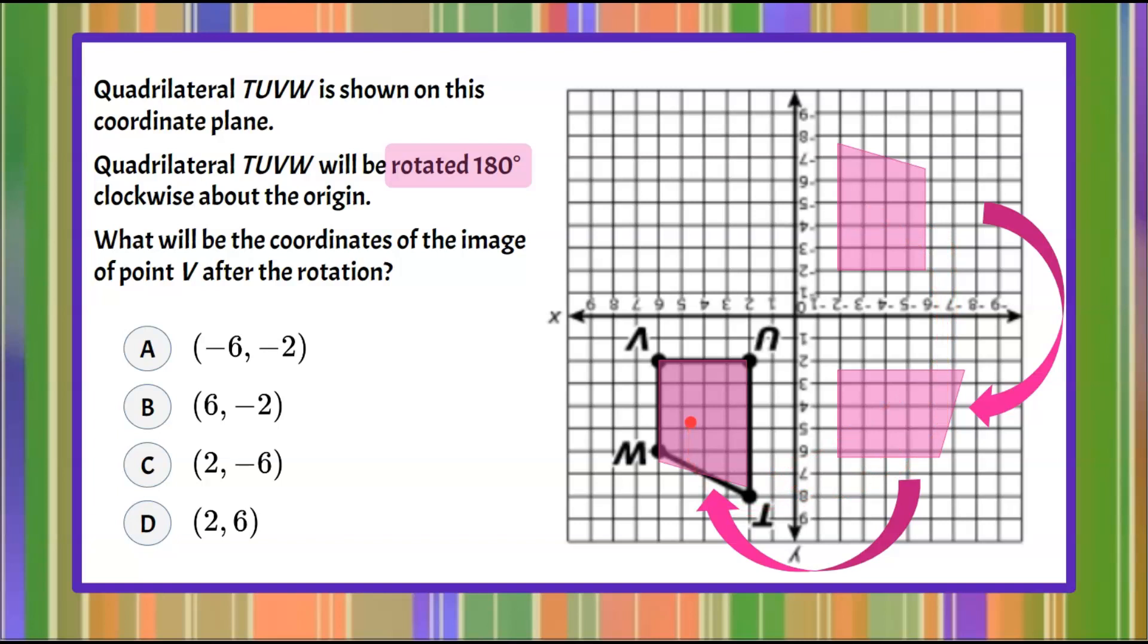Now I don't need to worry about the orientation of the image because I physically turned the coordinate plane. Now we're asked the coordinates of point V after this rotation. So here is where point V would lie after two turns, 180 degree rotation. We're going to write that as an ordered pair.